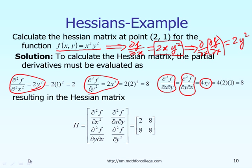That gives you the general expression for the Hessian matrix. However, if you want to calculate the Hessian matrix at the specific location x equal to 2 and y equal to 1, all you have to do is replace every y with 1 and every x with 2. That way, your Hessian matrix can be computed numerically as the matrix [2, 8; 8, 8].